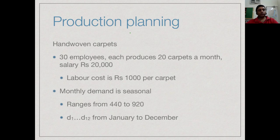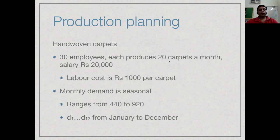The monthly demand is seasonal. After looking at past data, we have estimated the number of carpets we can expect to sell in each month of the year, with demand ranging from 440 to 920. With 30 employees making 20 carpets each, we can produce 600 carpets in a given month — this is what we can do with our current staff.